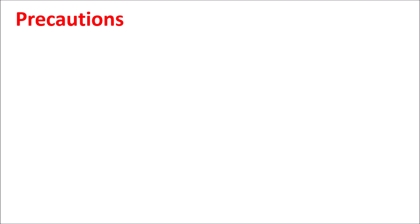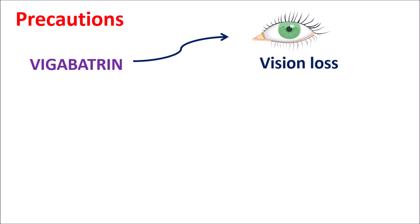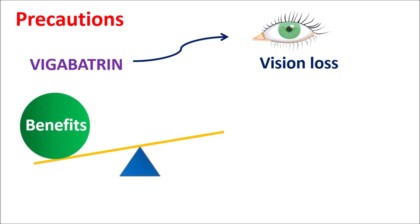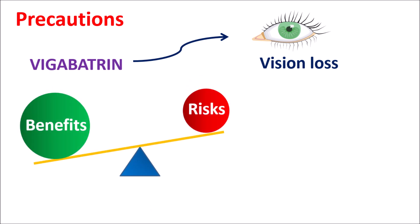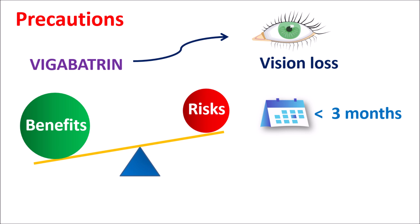Now let us discuss the precautions of this drug. One important precaution is that Vigabatrin can produce serious vision loss. There should be an assessment of benefits versus risks before use — Vigabatrin should only be used when the benefits outweigh the risks. This drug can produce significant vision loss in all patients, so it should be used carefully. If it is not effective within three months, it should be stopped. Particularly in infants, if it is not effective within two to four months, it should be stopped to avoid vision loss.